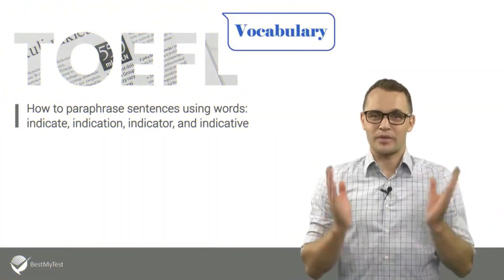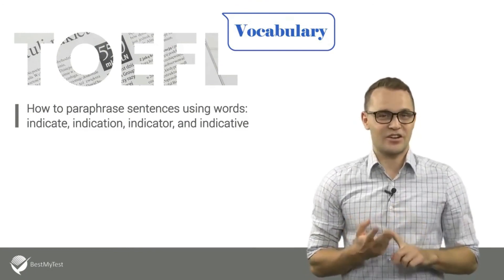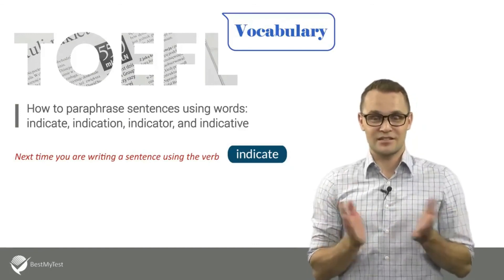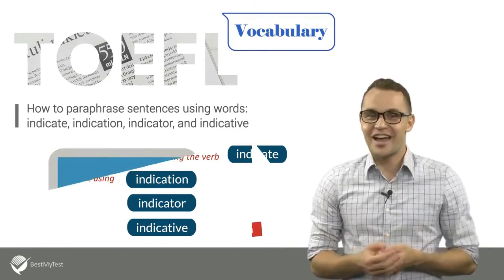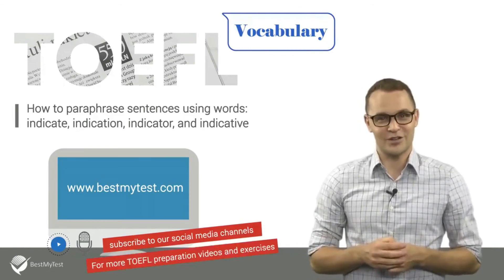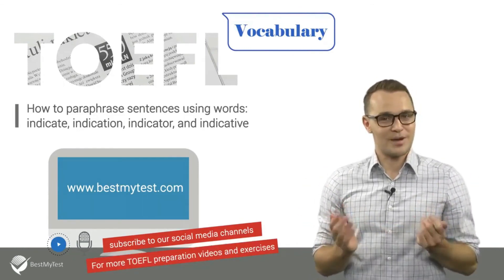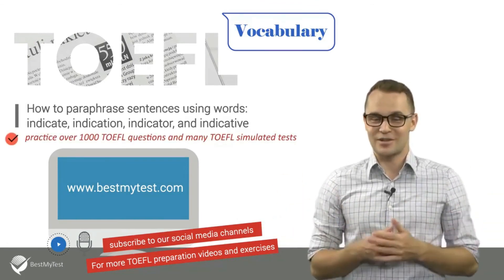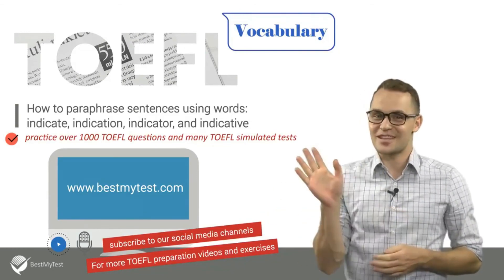This is the end of today's video. I hope now you know how to use indicate, indication, indicator, and indicative correctly. Next time you are writing a sentence using the verb indicate, try to paraphrase it using indication, indicator, or indicative. I encourage you to go to our YouTube channel and Facebook to watch more free TOEFL videos. You can also go to our website www.bestmytest.com to practice over a thousand TOEFL questions and many TOEFL simulated tests. This is Joe from bestmytest.com. I look forward to seeing you next time. Goodbye for today.